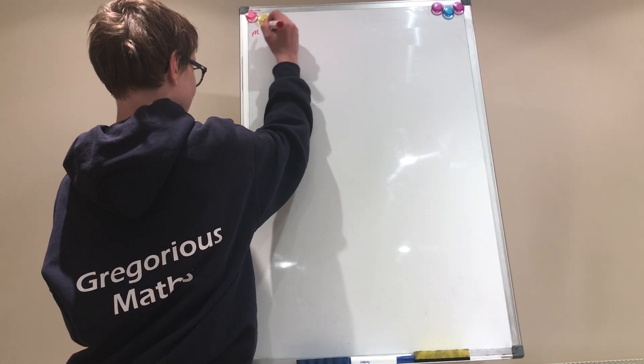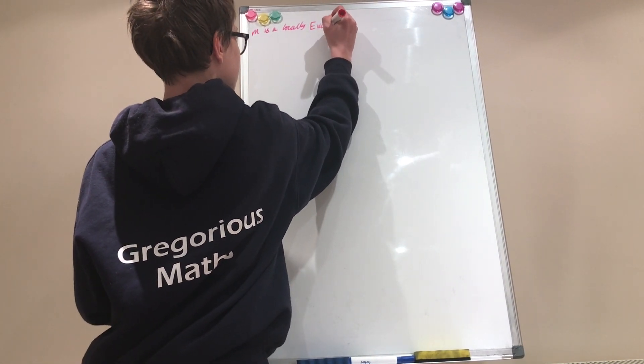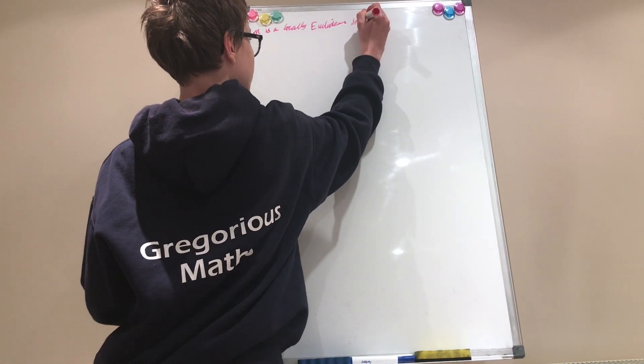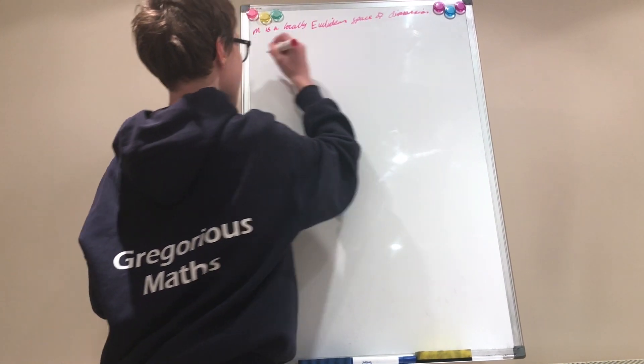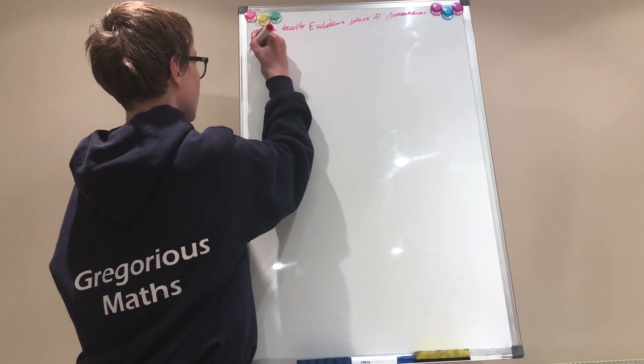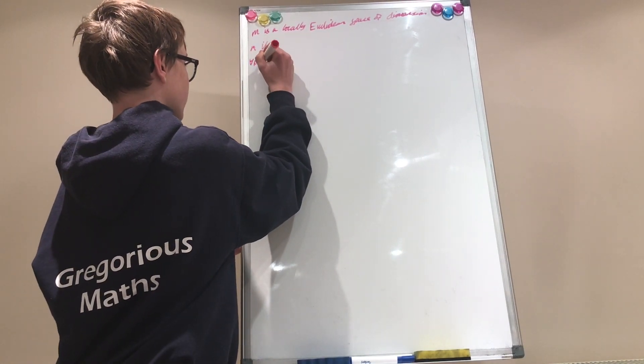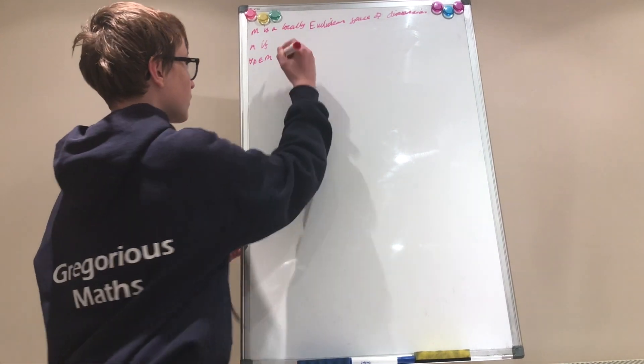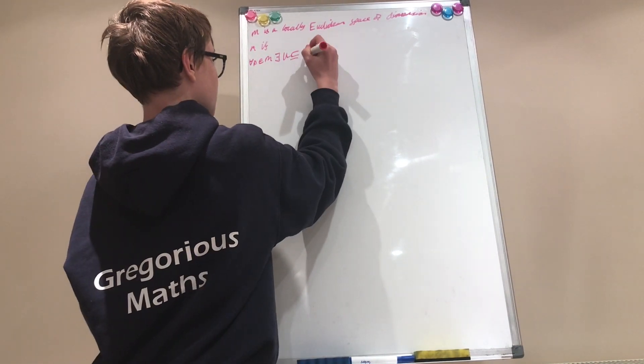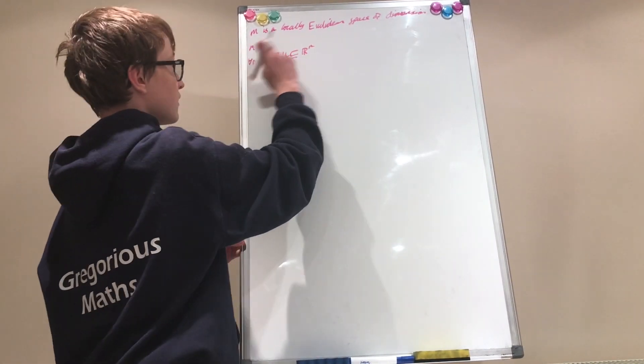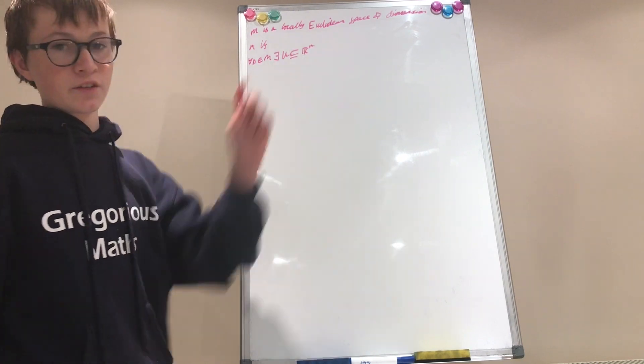So we say m is a locally Euclidean space of dimension n if, for every point P I pick in m, we have an open neighborhood u which is a subset of R^n. Now, this is the same n as the dimension. So this n and that n are the same, okay?